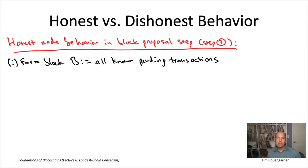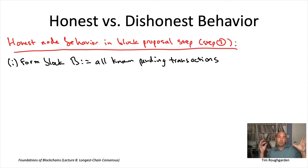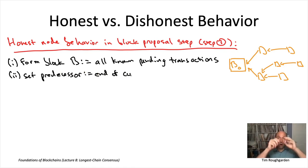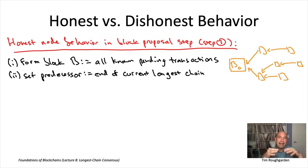The node assembles a block — a list of transactions — in the usual way. When becoming a leader, it asks: what transactions do I know about that haven't yet been executed or included in the blockchain? It produces a block that includes all of those transactions.